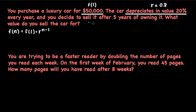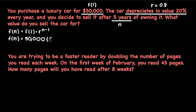You decide to sell it after five years of owning it — that's going to be our n. To write our explicit rule, we plug in our value for f(1), which is 50,000, times 0.8 to the n minus 1.